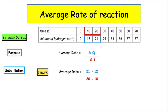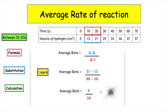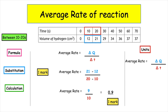For our calculation, 21 minus 12 gives us 9, and 20 minus 10 gives us 10. When we pop that into the calculator, 9 divided by 10 gives us 0.9, which gives us our second mark. For the units, we write out the formula: average rate is equal to change in quantity over change in time. The quantity is centimetres cubed, and the time is seconds. So we write centimetres cubed s to the minus 1, which gives us our third mark.